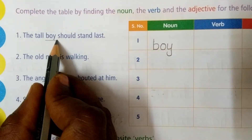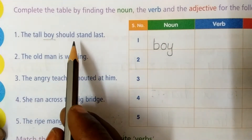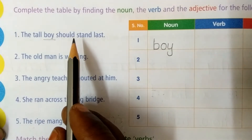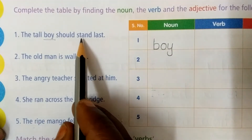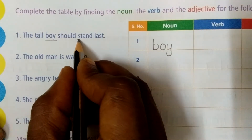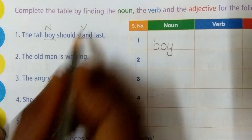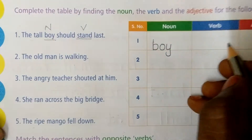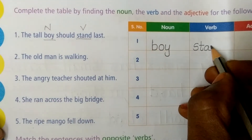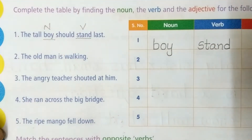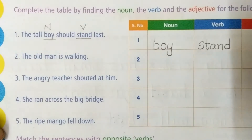This is noun. Next, what is verb? Verb is an action word. Here, what is the verb? Stand. Stand is the verb here. Write down 'stand' in the verb's place: S-T-A-N-D.